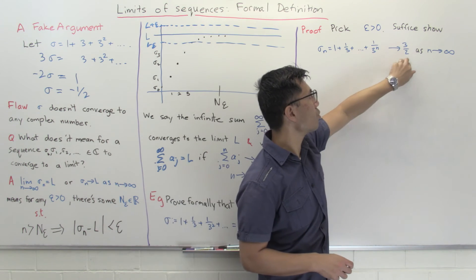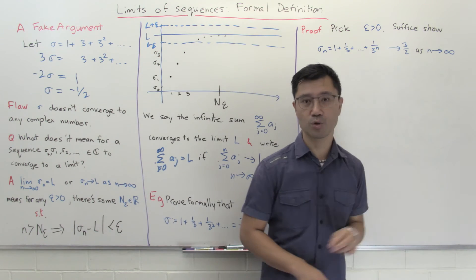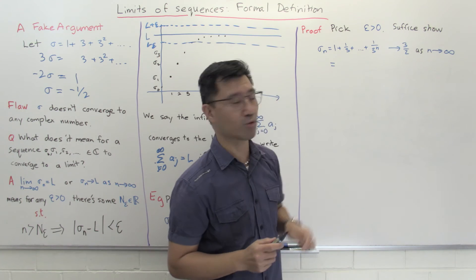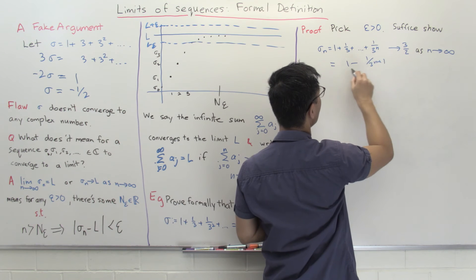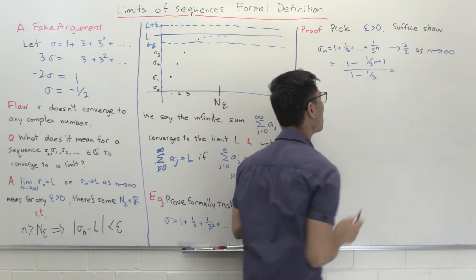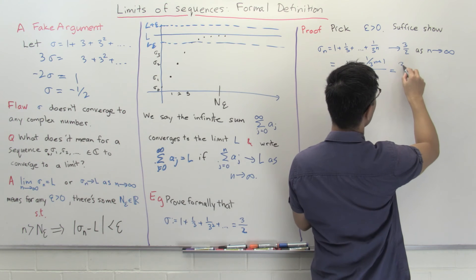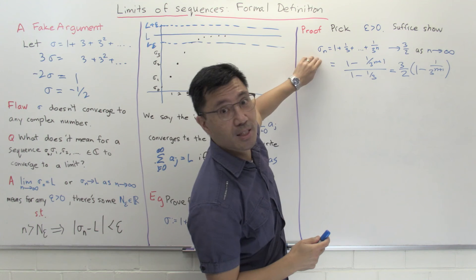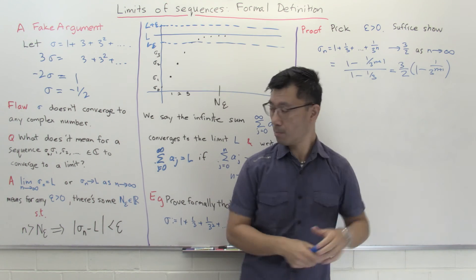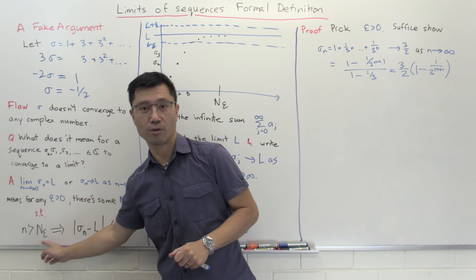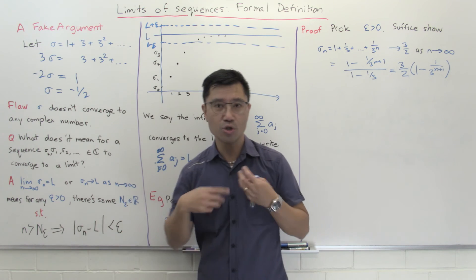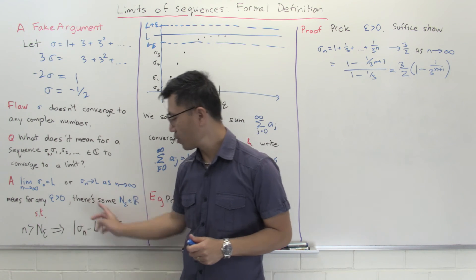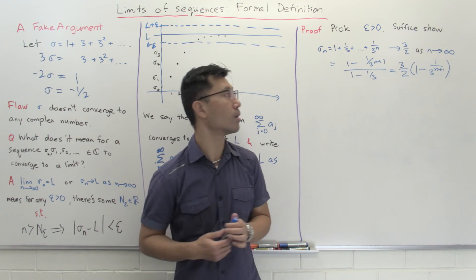Let's calculate this finite geometric partial sum. It equals (1 minus (1/3)^(n+1)) divided by (1 minus 1/3), where one minus the common ratio is two-thirds in the denominator, giving three-halves times (1 minus (1/3)^(n+1)). We want to show this is within epsilon of the limit three-halves for large enough n. The key to these formal proofs is finding N(epsilon). Let's look at the difference between σ_n and three-halves to see how close we are to the limit.